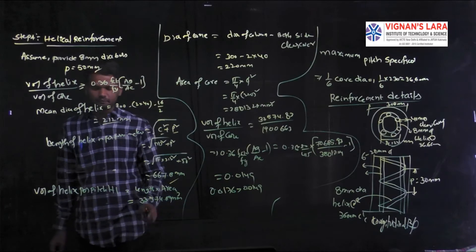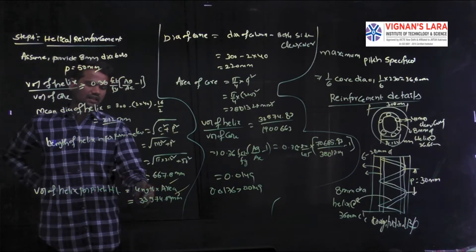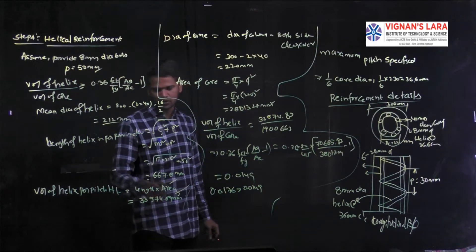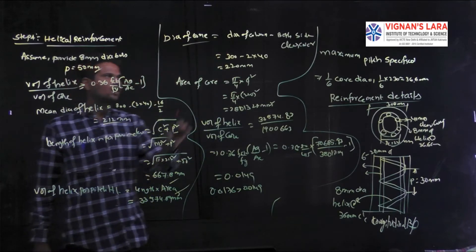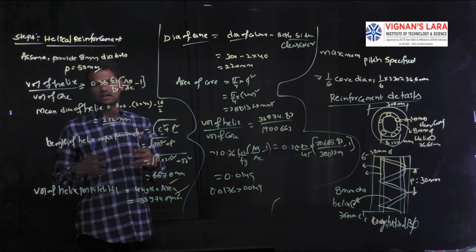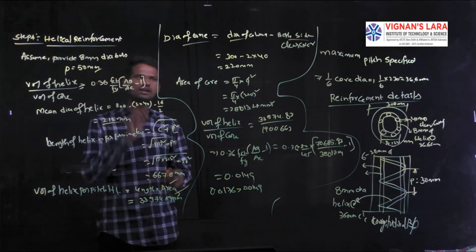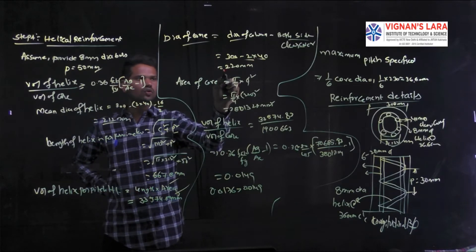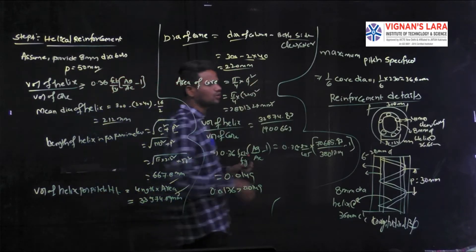The length of the helix per meter length = 667.8 mm. Volume of helix per pitch length = length × area of helix bar = 3357.09 mm³. The diameter of the core = column diameter − 2 × clear cover = 300 − 2×40 = 220 mm. Area of core = π/4 × 220² = 38013.27 mm².